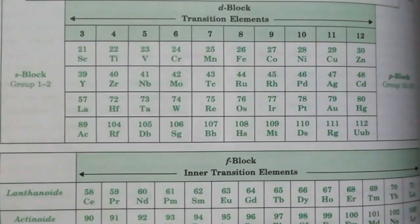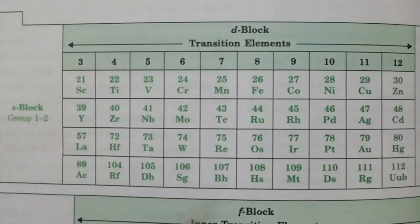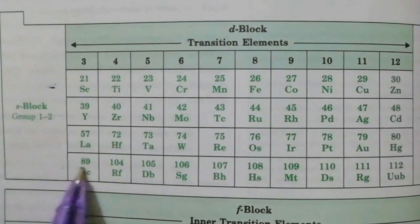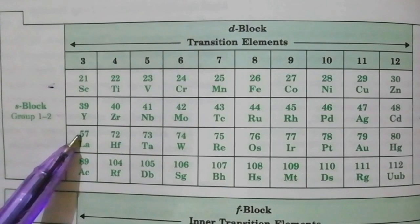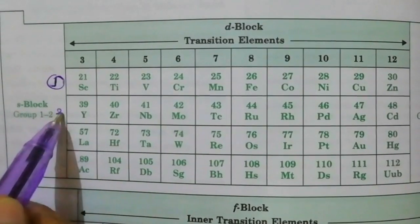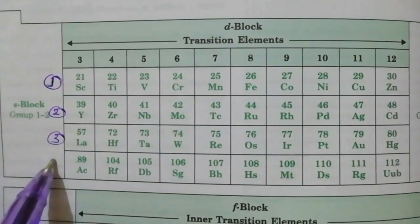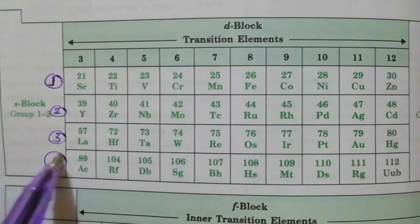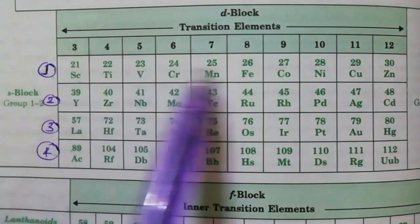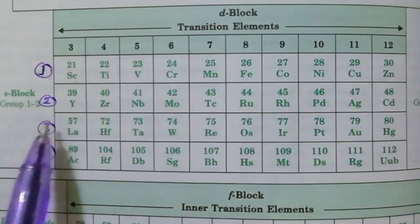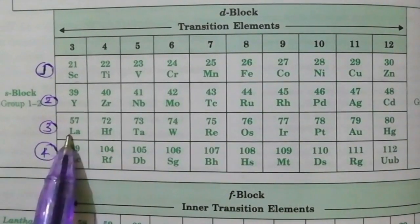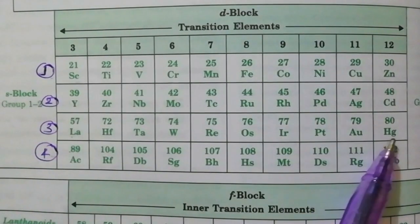The lower portion below the main periodic table is F block elements. Looking in detail at the transition element rows: first row, second row, third row, and fourth row — that's why we have four transition series. The first transition series is scandium to zinc, the second is yttrium to cadmium, the third is lanthanum to mercury, and the fourth is actinium up to element 112.